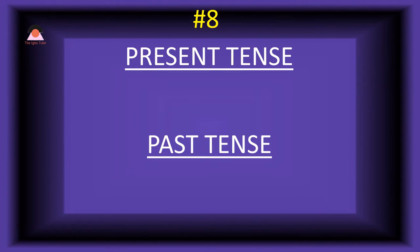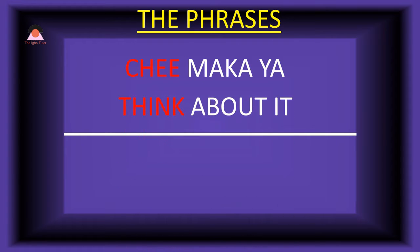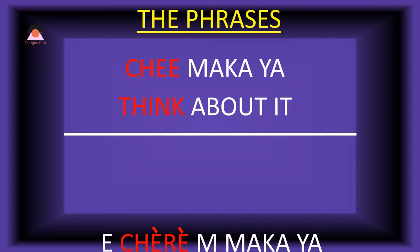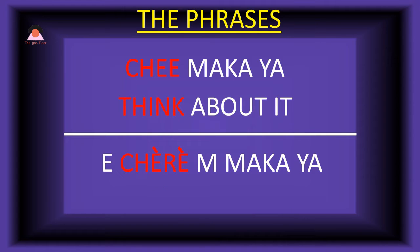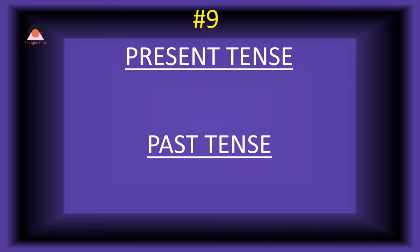Word number eight. Present tense: 'che,' meaning 'think.' The past tense of che is 'chere,' meaning 'thought.' Present tense phrase: 'che makaya,' which means 'think about it.' Past tense: 'e-chere makaya' — I thought about it.